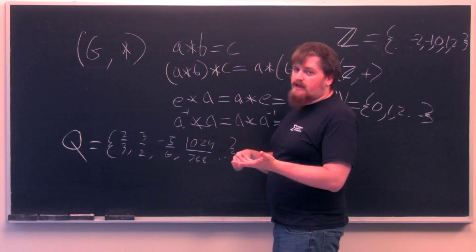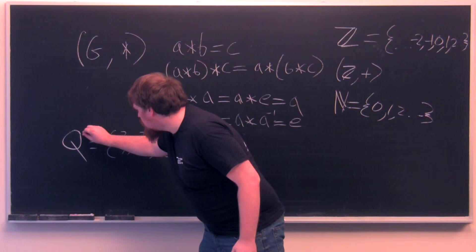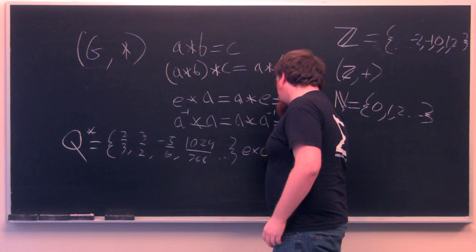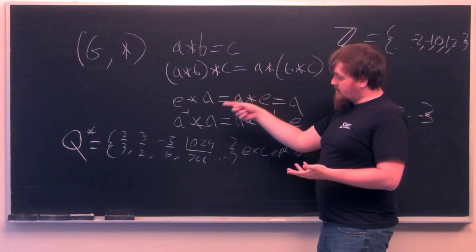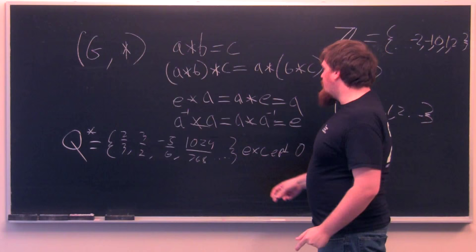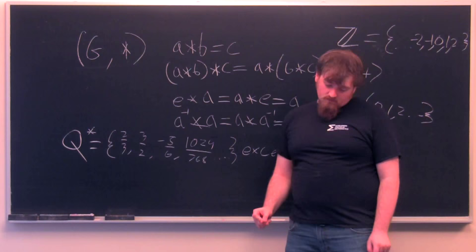But the thing is Q still isn't even a group, because Q contains 0. And 0 times anything is 0, so 0 times nothing can be 1. So not every element has an inverse. In order to make Q a group, we call it Q star, which has all these fractions as an element except 0. Now, every rational number times another rational number is another rational number. Multiplication is associative. 1 times any rational number is equal to that same rational number. But now we can make an inverse. So we have a over b, then its inverse is b over a.